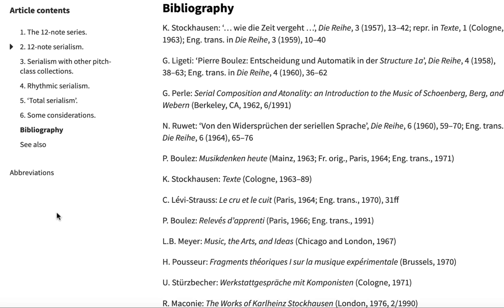For example, if you find a Grove article that was published in 2001, you can assume that there may be newer scholarship and more recent findings that aren't included in the 2001 article. This means that you will need to conduct some additional research to fill in the gaps.